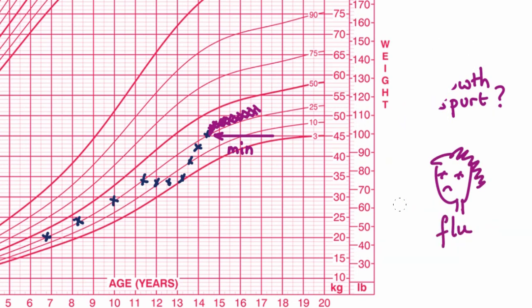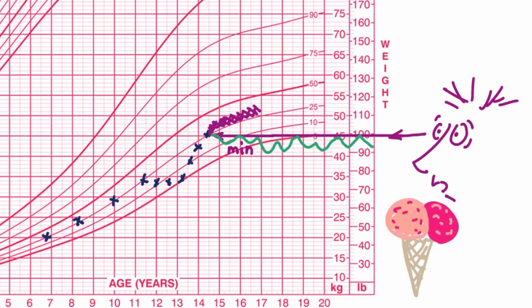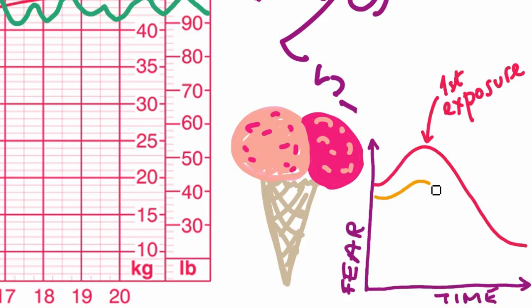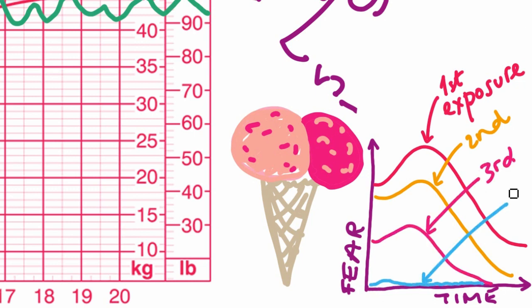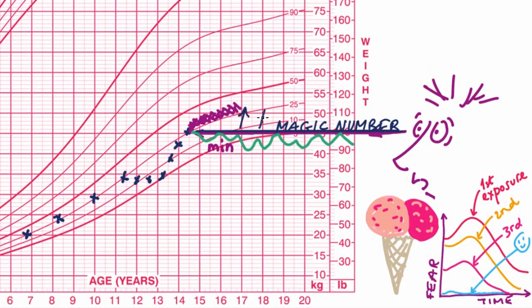Also, because when people battling an eating disorder are fixated on a goal weight, they may be drawn to restrict whenever they go slightly over. So in the same way as you desensitize your child to the fear of ice cream by giving them ice cream, I believe it may be useful for your child to go over any magic number and to experience with your support that they are still fine.